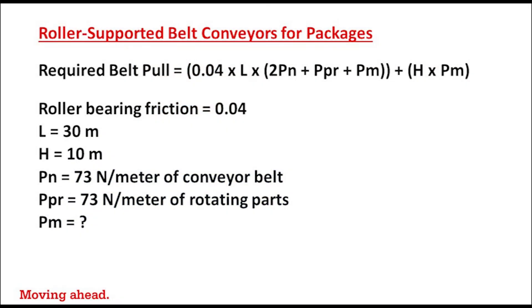Here are the simplifying assumptions you can use to get a close approximation of required belt pull. You can use 0.04 to closely approximate roller bearing friction in a standard roller. For Pn, the weight per meter of the belt, we suggest 73 newtons per meter. For the weight per meter of the rotating components, we also suggest 73 newtons per meter — that would be all the rolling stock, both the carrying strand and return strand rollers.